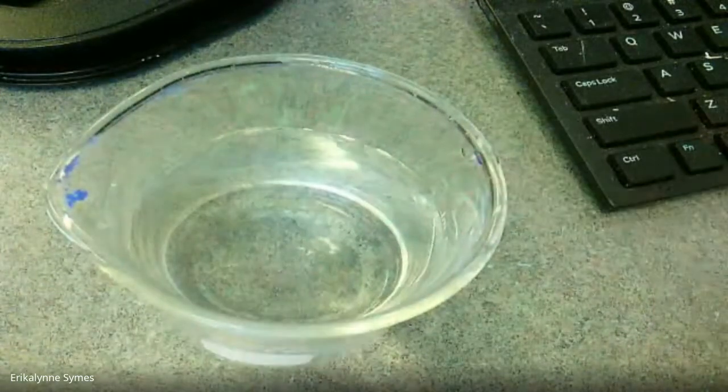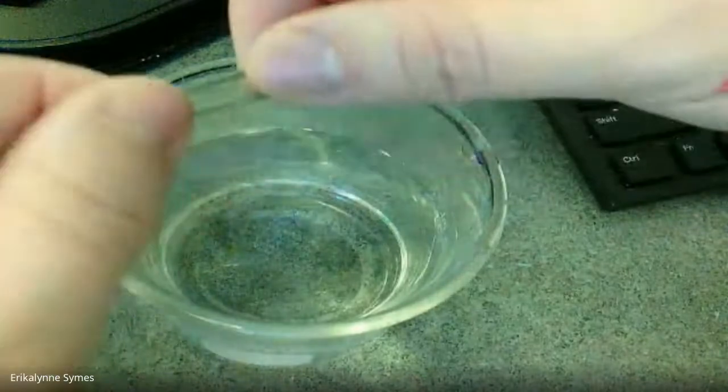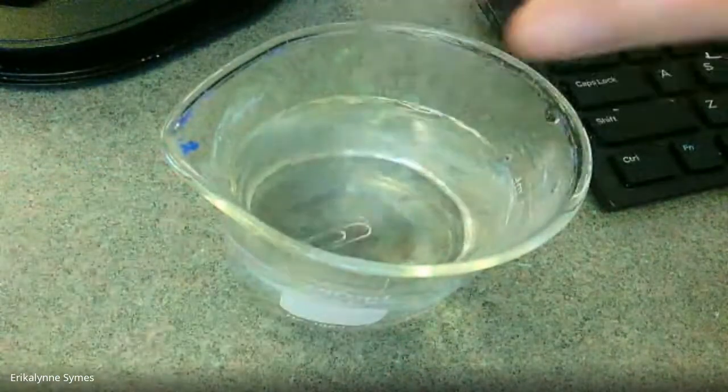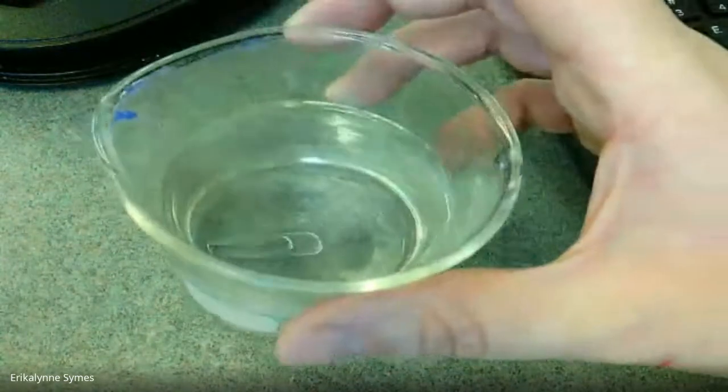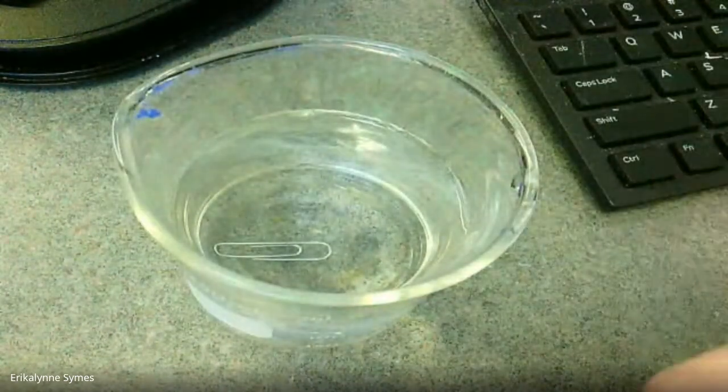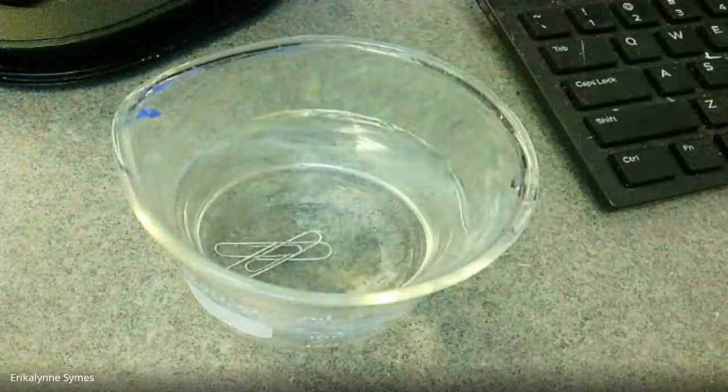All right, so here I have my glass of water. And I'm going to try to put my paperclip so he's floating on top of the water. Okay, so I'm going to go slow. He sunk to the bottom. See that? I'm going to try again. Takes a few times to practice. I sunk again.